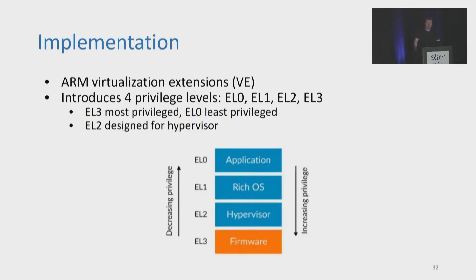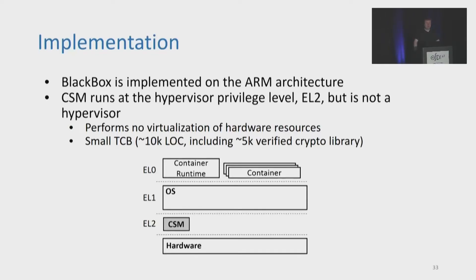To actually implement BlackBox, we chose the ARM architecture for its growing use in PCs and cloud computing along with its dominance on mobile and embedded systems. The ARM architecture supports VMs via the ARM virtualization extension, which introduces four privilege levels: EL0 to EL3, with EL3 being the most privileged and designed for firmware. EL2 was designed for the hypervisor, EL1 is where the OS runs, and user space is EL0. To implement the CSM on ARM hardware, we repurpose the EL2 hypervisor privilege level to run the CSM, giving it control over the OS. The CSM runs at the hypervisor privilege level but is itself not a hypervisor and performs no hardware virtualization. Because of its limited scope, the CSM is fewer than 10,000 lines of code, over half of which are part of a verified crypto library.